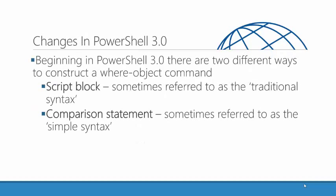In PowerShell 3.0, there were a lot of changes to the structure and language of PowerShell, and one of the places that was really evident was with the Where-Object cmdlet. Microsoft gave us two different syntax variations for using Where-Object. One is referred to as the script block syntax — or the traditional syntax, because that's what we had in versions one and two. And then there's the comparison statement syntax, which is the simple syntax, because it really did simplify the way that this works.